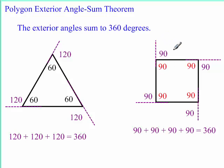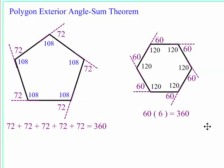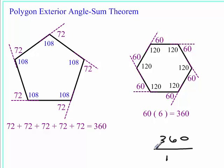For a square, 90 and 90 make a linear pair — four exterior angles of 90 degrees each, and 4 times 90 is 360. This works for irregular figures too — even an irregular polygon's exterior angles sum to 360. For a regular hexagon, there are six exterior angles of 60 degrees each, and 6 times 60 is 360. This leads to a formula: for a regular polygon, divide 360 by the number of sides to find each exterior angle — but only for regular polygons.